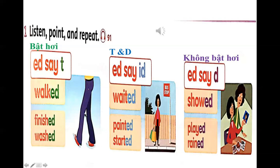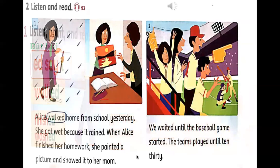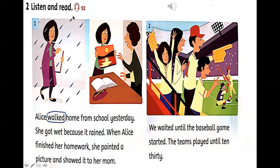Vậy thì thầy xin nhắc lại. ED mà đọc là /t/ là những động từ chúng ta bật hơi. ED đọc là /ɪd/ đối với những từ tận cùng là T hoặc D. Phần còn lại là những từ không bật hơi thì các bạn sẽ dùng /d/. Sau khi các bạn biết về cái này thì hy vọng là những động từ quá khứ các bạn đọc cho đúng. Các bạn muốn đọc đúng thì các bạn phải luyện tập. Phần tiếp theo thầy sẽ có phần listen and read — các bạn sẽ nghe người ta đọc cái đoạn văn và xem những từ ED đó người ta đọc thế nào.